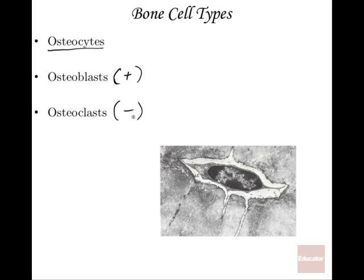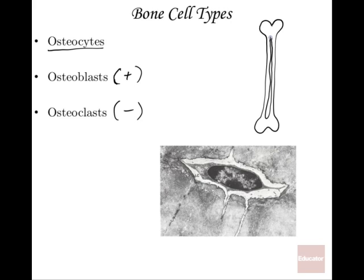Osteoclasts secrete chemicals, usually acids, that help wear away and get rid of bone. You might wonder why we need that. One example: the medullary cavity — that section in the middle that's completely hollow — got that way because of osteoclasts. Also, spongy bone gets those little holes in it from osteoclasts. And when it comes to my collarbone, since I broke it about 15 years ago, it's not quite as bulging or bumpy as it used to be. Osteoclasts will wear away bone that you don't need — if there's more than needed in an area, they gradually wear it away.